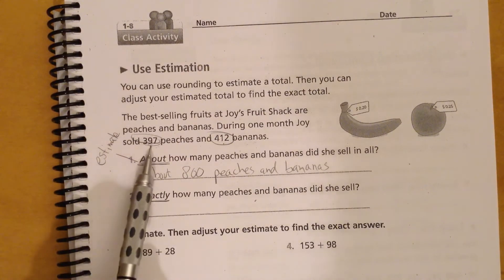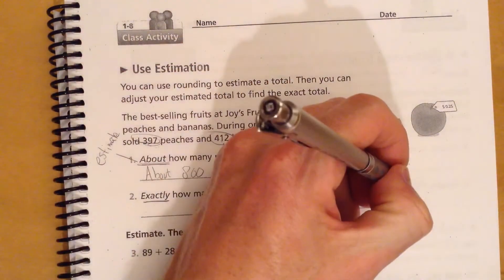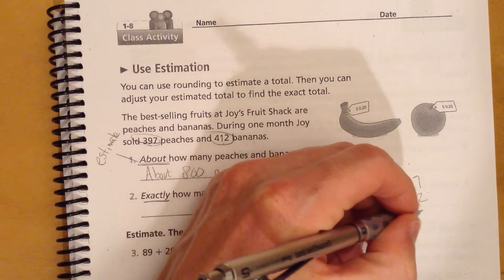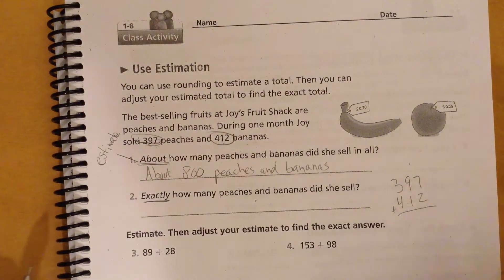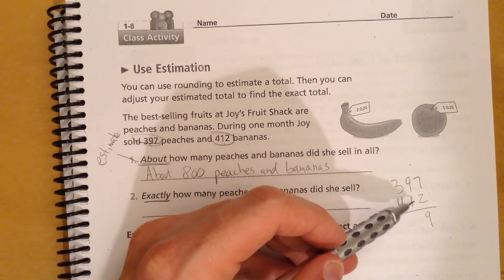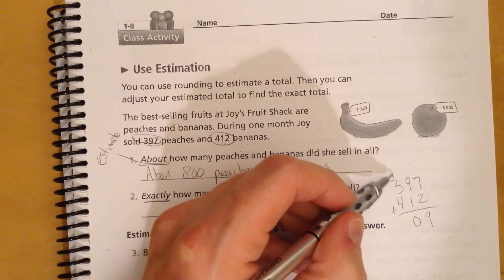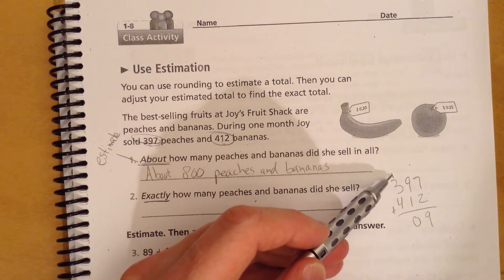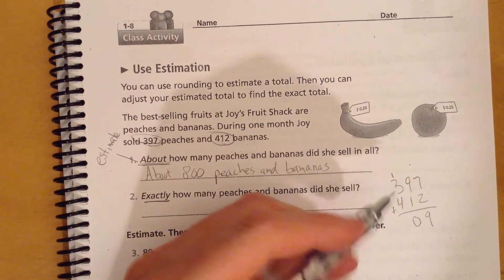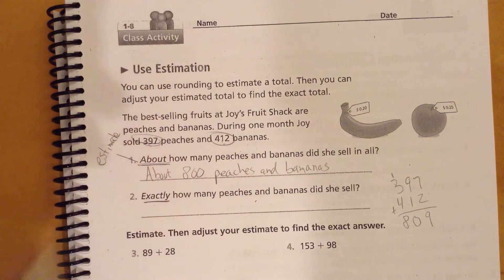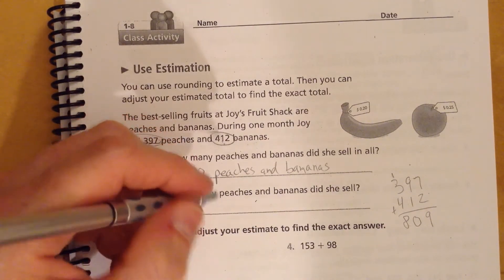So here's what we're going to do. We're going to take these exact numbers and add them up over here. So let's see, 397 and 412. I'm going to give you a second to go ahead and add this up yourself. So hopefully you came up with 7 plus 2 equals 9. 9 plus 1 equals 10. We move our group. Now you can move your group up here. You can move your group down here. It doesn't really matter as long as you remember to move it, okay? Then we have our 1 plus 3 equals 4. 4 plus 4 equals 8. So, she sold, Joyce sold exactly 809 peaches and bananas.